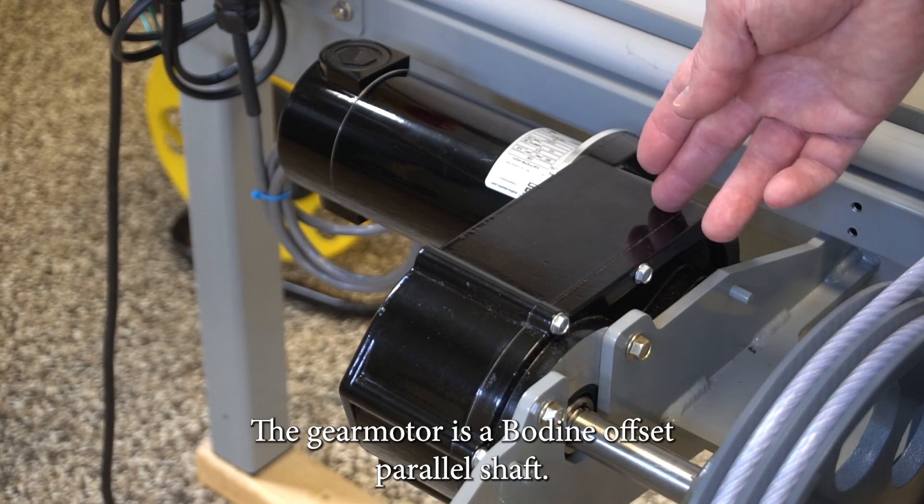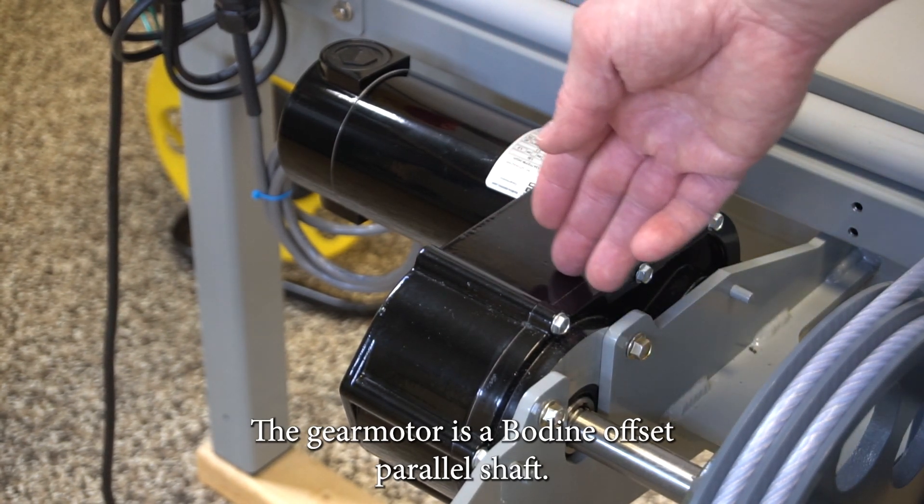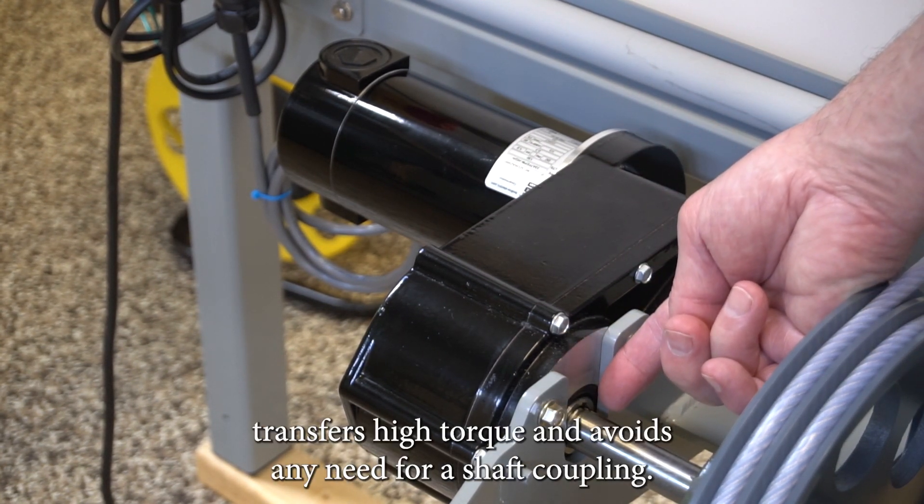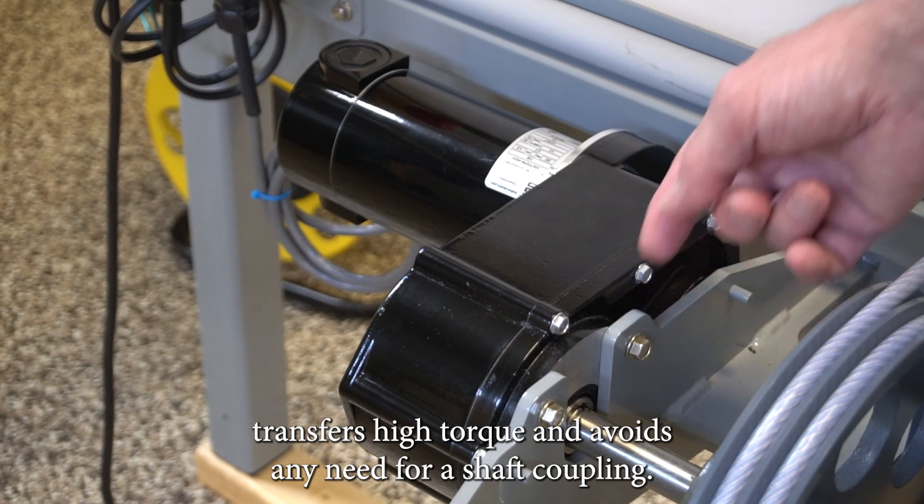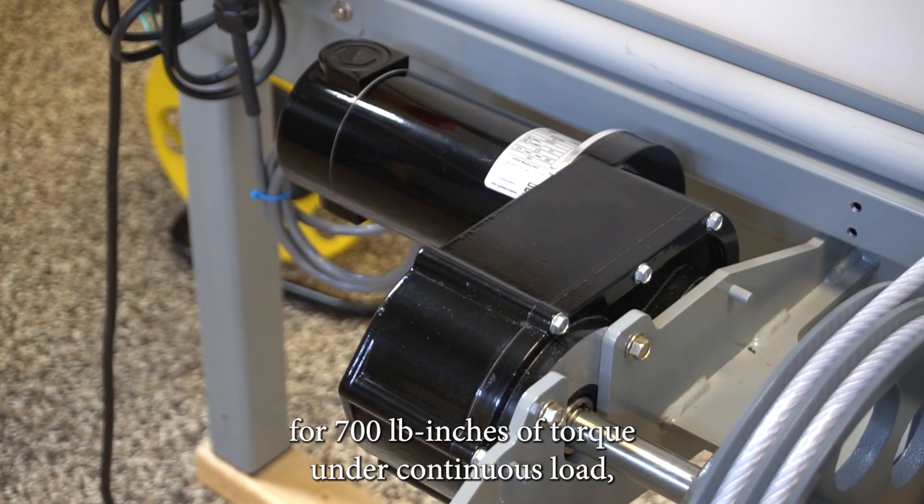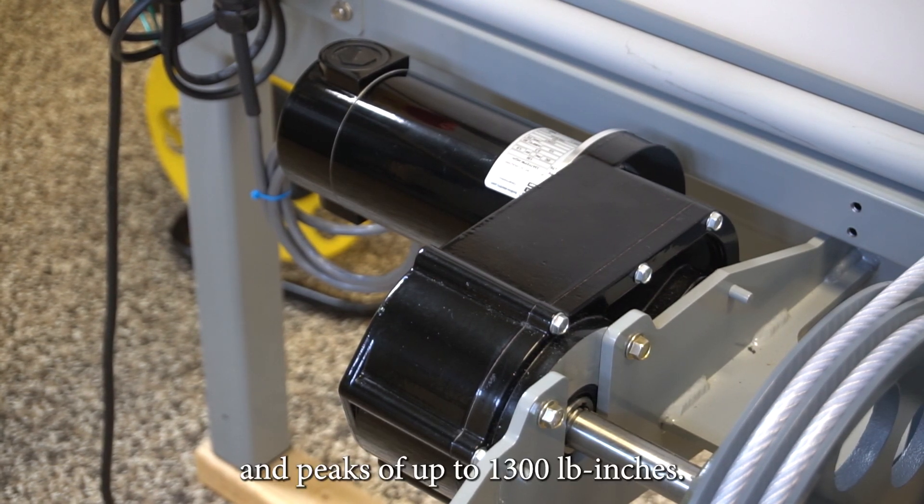The gear motor is a Bodine offset parallel shaft. Its hollow shaft gear head transfers high torque and avoids any need for a shaft coupling. The motor is rated for 700 pound-inches of torque under continuous load and peaks of up to 1300 pound-inches.